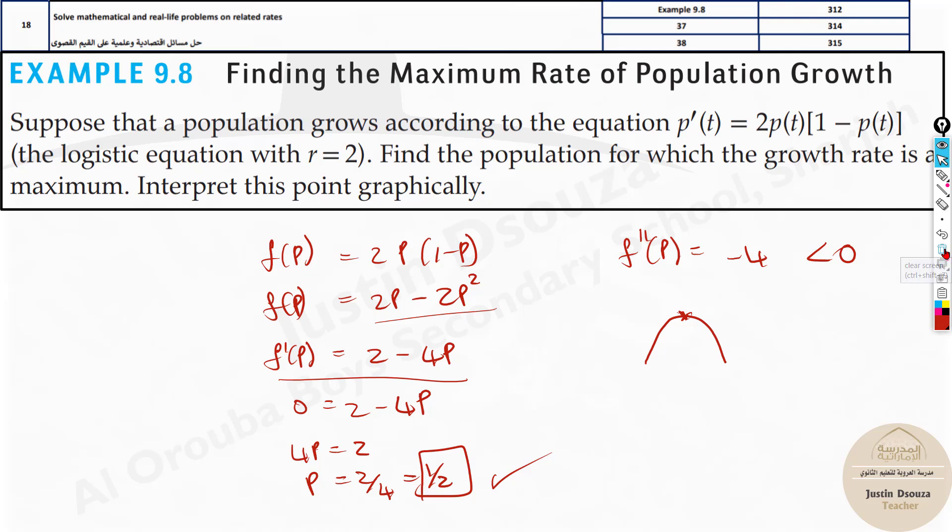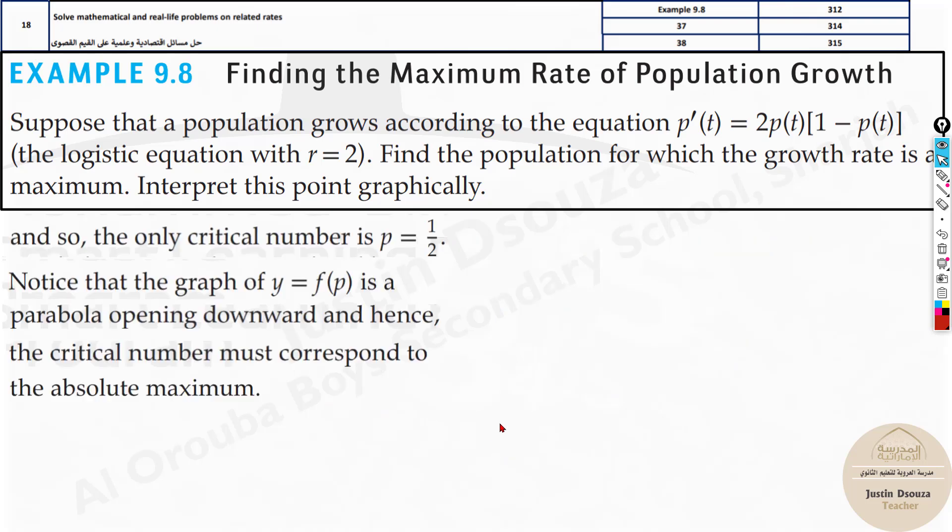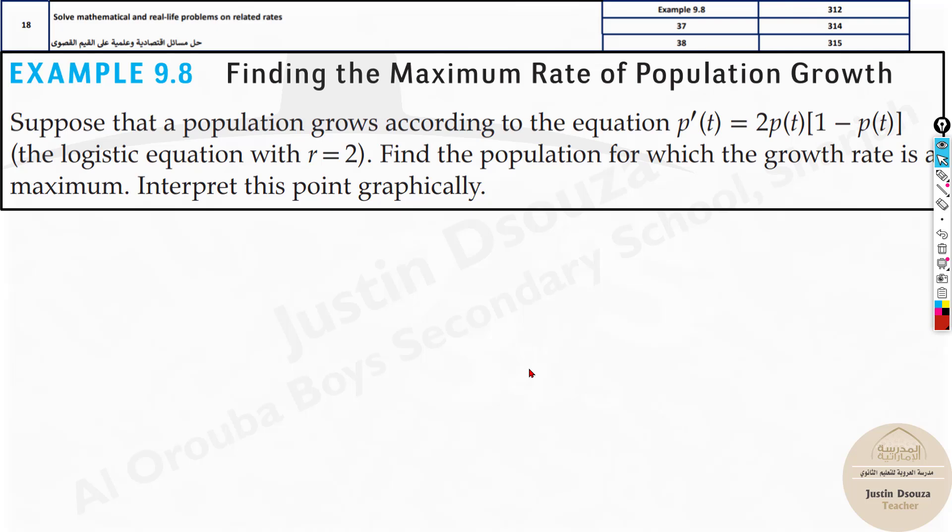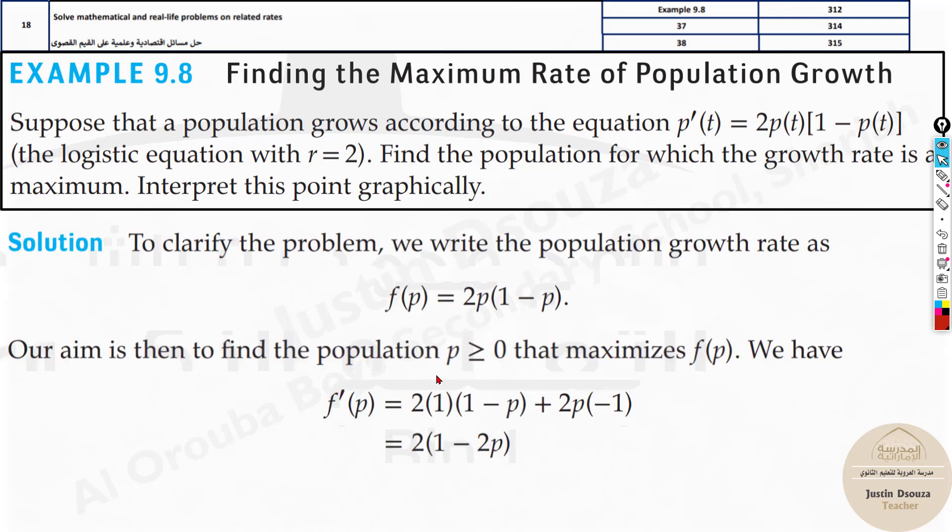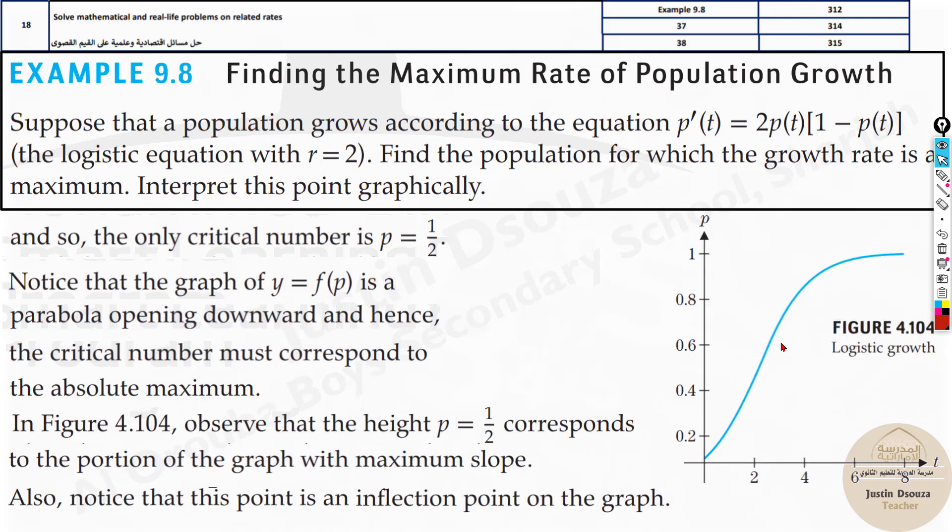So that is how we can solve it. The most important thing is the critical number is p equals half. So that is the thing we need to solve for. You can see over here, the p equals half. We just derived it.